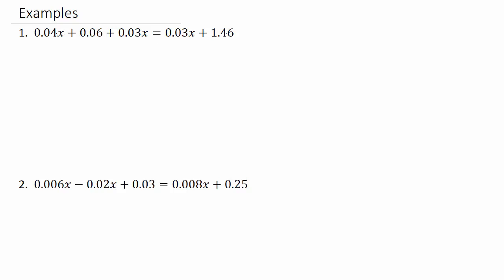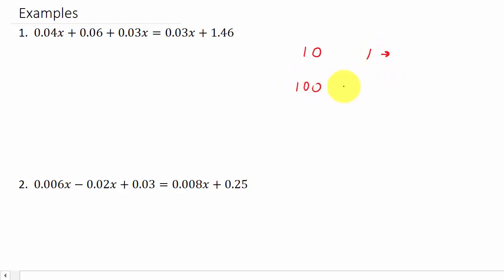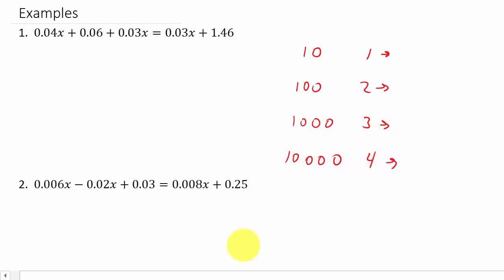The thing you've got to know here is that whenever you multiply a number by 10, that's going to move the decimal one place to the right. A hundred will move it two places, a thousand will move it three places, ten thousand moves it four places, and so on. However many zeros you have behind the one, that's how many places to the right it's going to move the decimal.